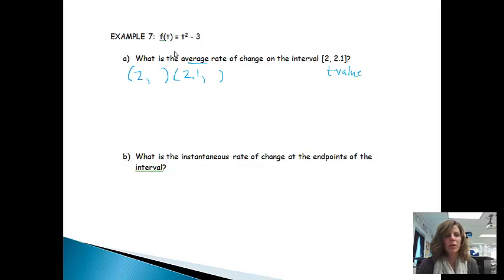So we actually are given the point 2 something and 2.1 something. And we need to figure out what those are. So if I plug 2 into this function, you'll notice 2 squared is 4 minus 3 is 1. If I plug 2.1 in, I get 4.41 minus 3, which will give me 1.41.